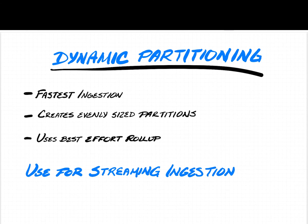It uses best-effort roll-up because each individual task processes a subset of the data and performs the aggregation on that subset. Since multiple workers can have data for the same time chunk and the same dimension values, each gets a portion of the rows and therefore a portion of any sum or count — resulting in partial aggregations across multiple tasks. At query time, the query engine merges those results to produce a final aggregation, requiring a bit more work. This is the strategy used for streaming ingestion precisely because tasks are completely independent and it's the fastest form of ingestion, allowing excellent scalability as stream throughput grows.